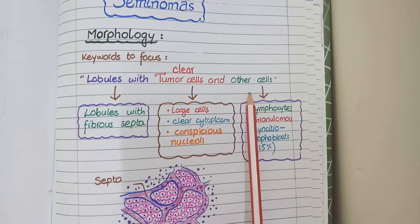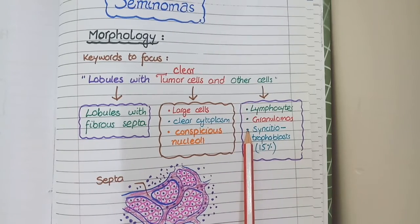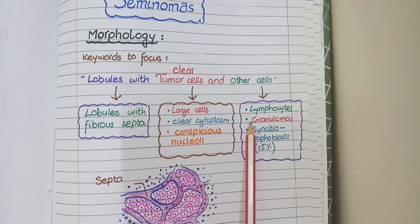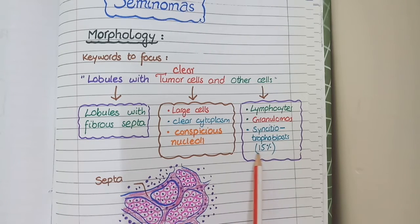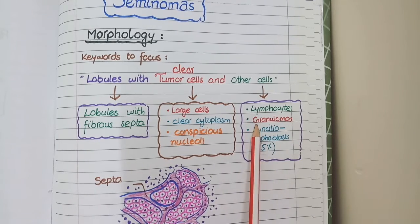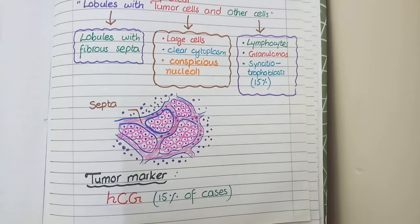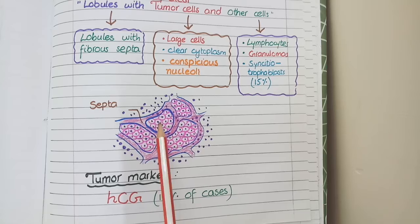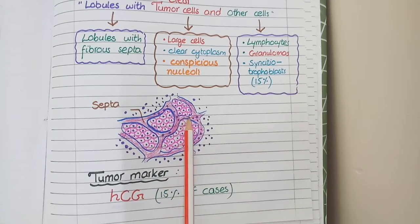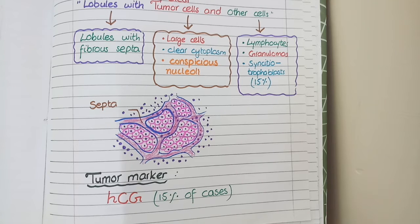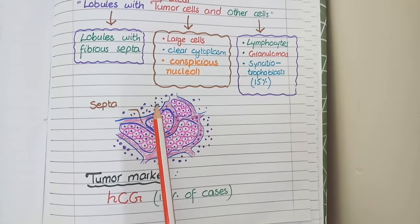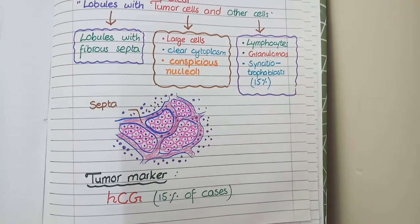The third keyword is 'other cells,' remembered by the mnemonic LGS: L for lymphocytes, G for granulomas (cells of granulomatous inflammation), and S for syncytiotrophoblasts. These syncytiotrophoblasts are present only in 15% of cases. In the diagram, the tumor mass shows multiple lobules separated by thick fibrous collagenous septa, large clear tumor cells with prominent nuclei, and blue-colored dots representing lymphocytes. Granulomas and syncytiotrophoblasts can also be present.